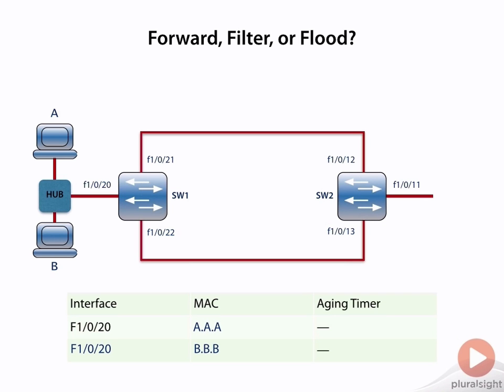So A and B are both going to be seen in the MAC address database on switch one as being connected to f1/0/20. So when A tries to communicate with B...